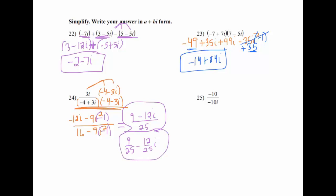For problem 25, since there's only an i with negative 10 on the bottom and no other number in front, just multiply top and bottom by i — or you can cancel the negative 10s first to get 1 over i. Then multiply top and bottom by i to get i over i squared. Change i squared to negative 1, giving i over negative 1, which is negative i.